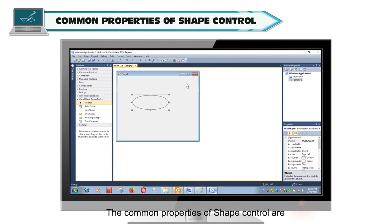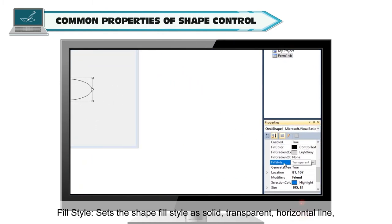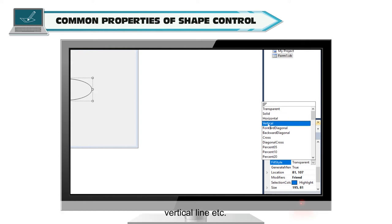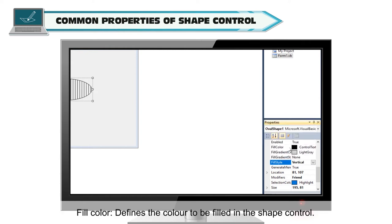The common properties of shape control are Fill Style, which sets the shape fill style as solid, transparent, horizontal line, vertical line, etc. Fill Color defines the color to be filled in the shape control.